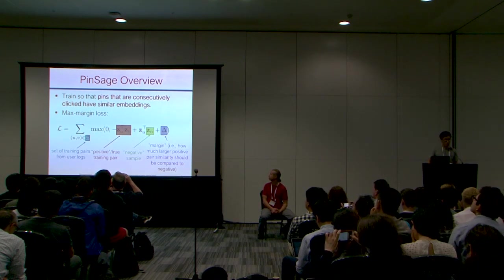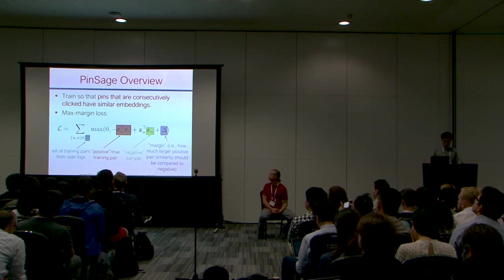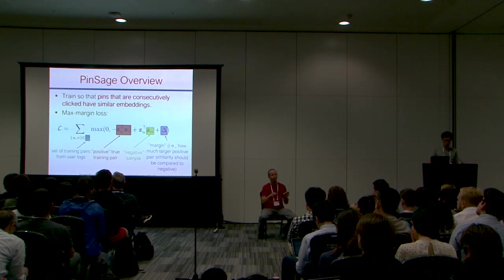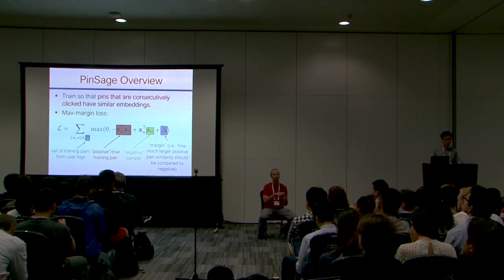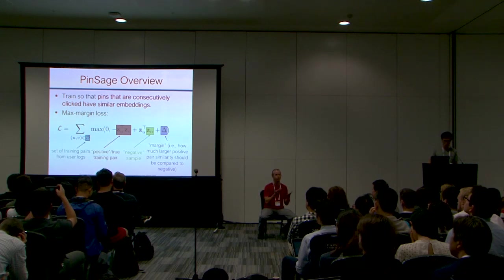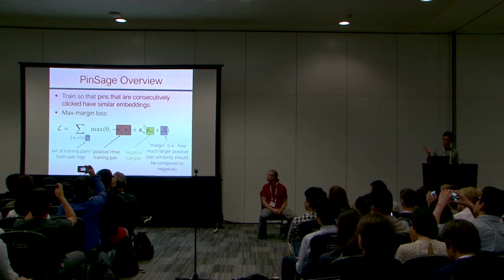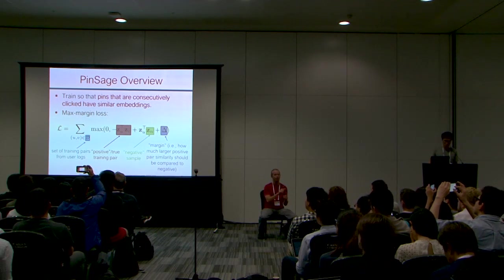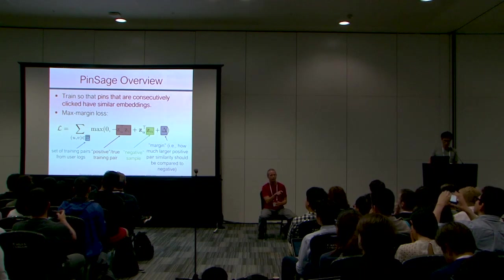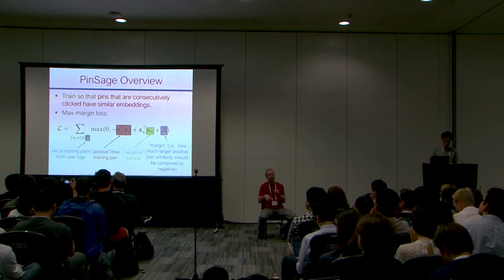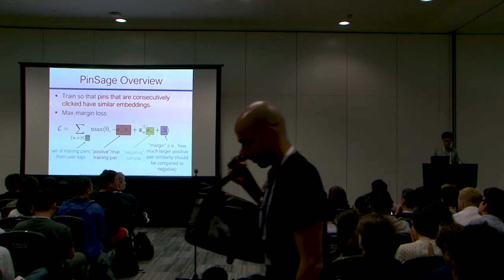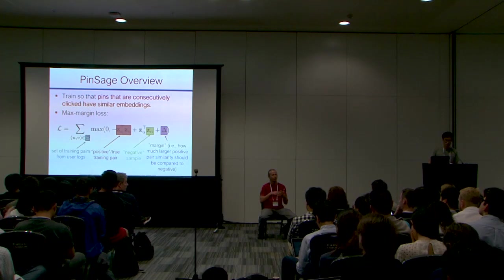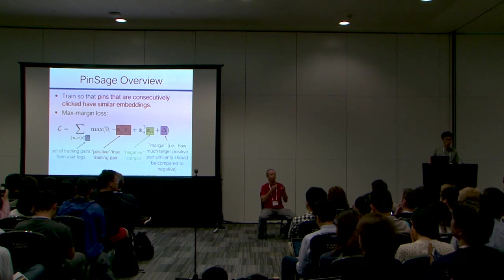To train the system, we use a max-margin loss. Given positive pairs U and V — pins that were consecutively clicked — the loss states that the similarity between the positive pair should be at least as large as the similarity of a negative pair plus some fixed margin delta. We found that this max-margin loss works much better for graph neural nets in the context of recommender systems compared to previous algorithms.